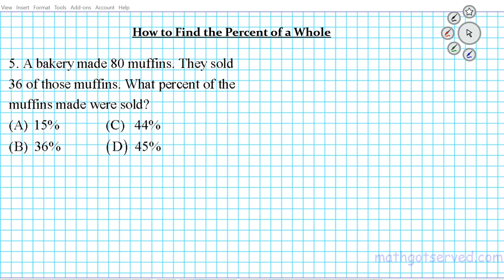Let's take a look at number five. In question number five, we're being assessed on how to find the percent of a whole. Question five reads: a bakery made 80 muffins. They sold 36 of those muffins. What percent of the muffins were sold?